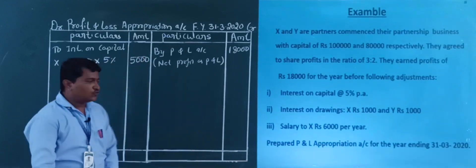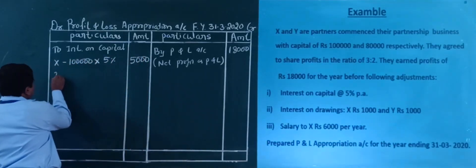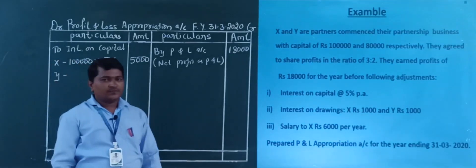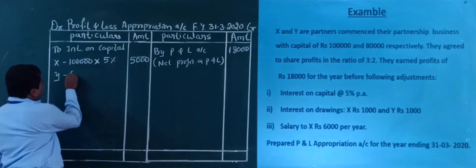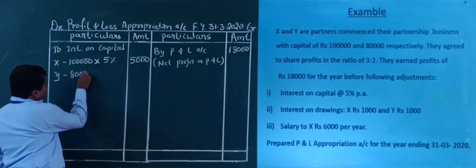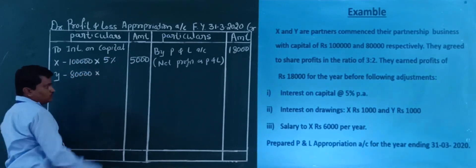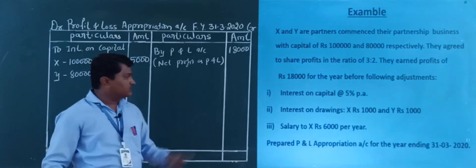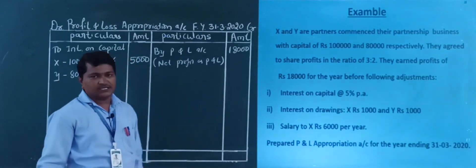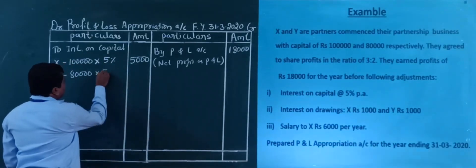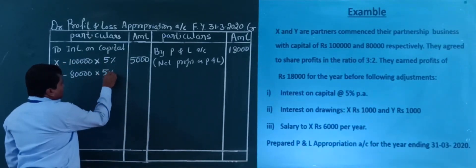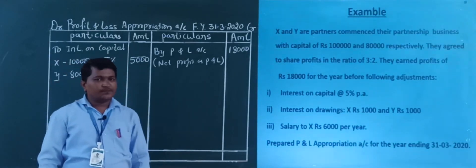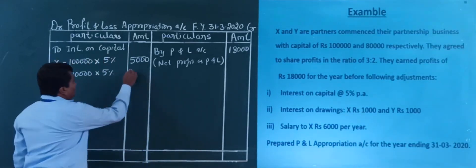Next, for partner Y, the capital is rupees 80,000. The interest on capital is at the same rate of 5%. So the calculation is: 80,000 into 5 percent — the answer is rupees 4,000. Interest on capital for Y is 4,000.